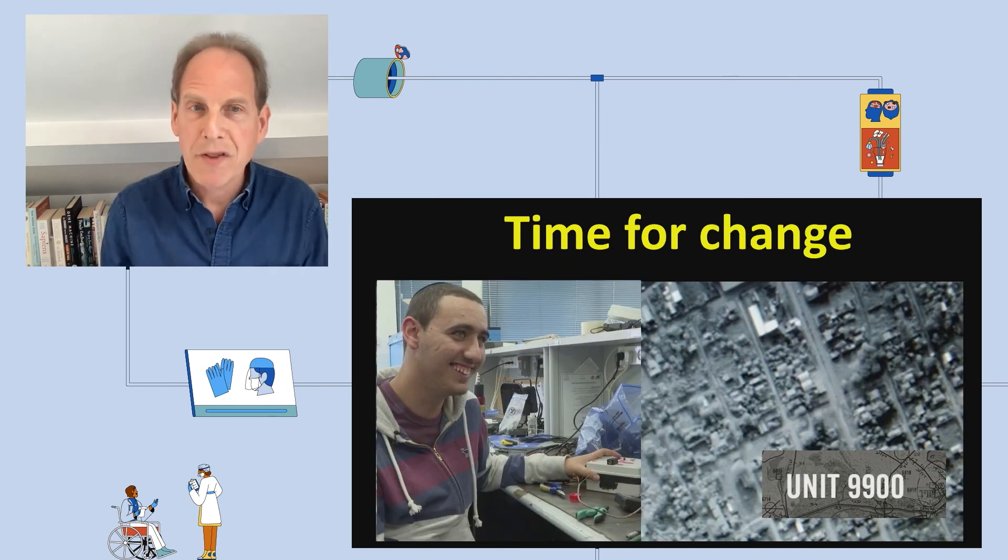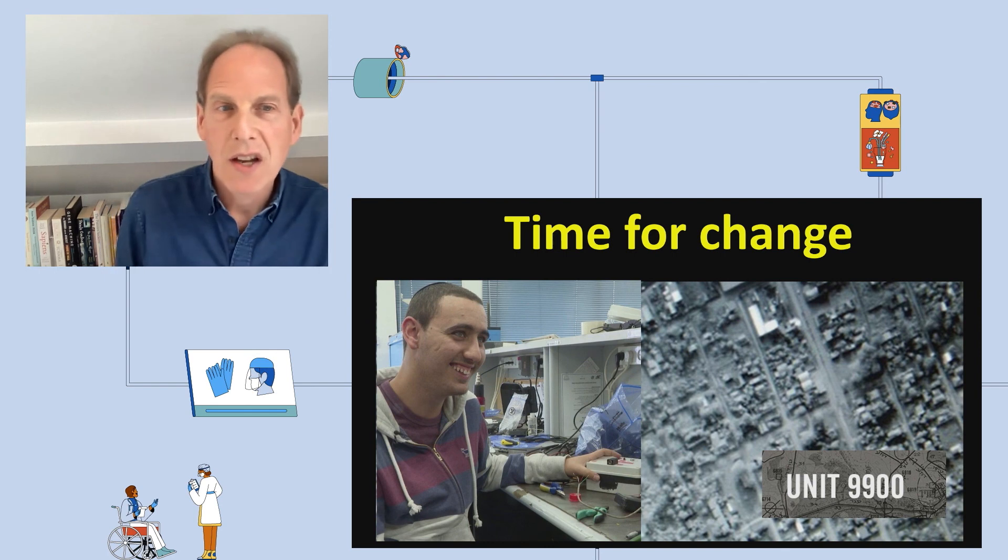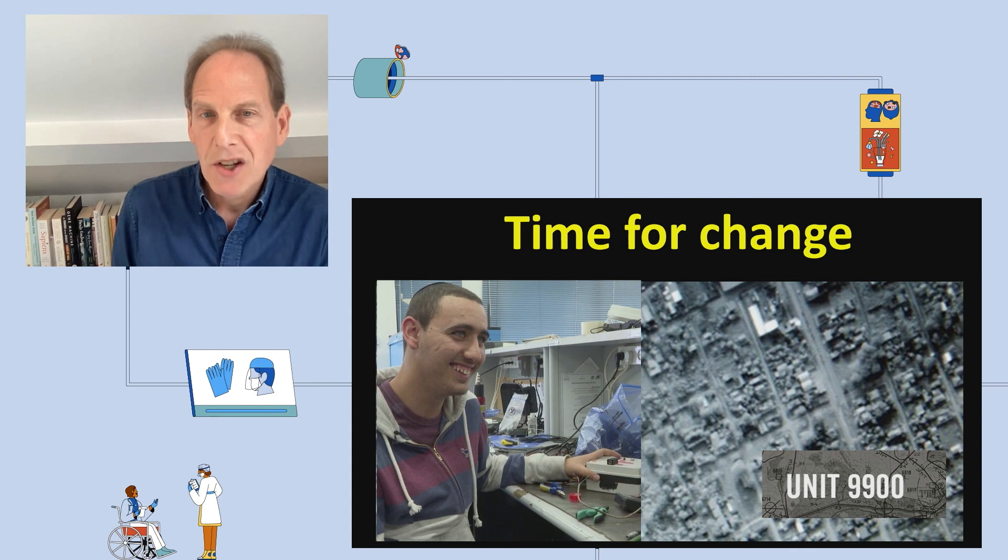So I think it's time for a change. We can learn from the Israeli army that has a special unit who only recruit autistic adults because of their aptitude to look at thousands of aerial photographs like this one, to look for unexpected patterns that might be a sign of terrorist activity. So they are making sure that autistic people are included and are playing their part in society.